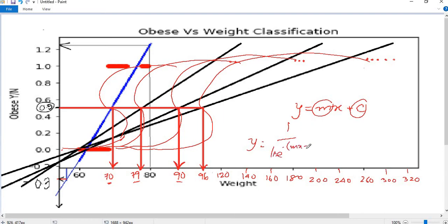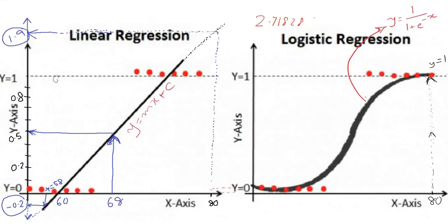The logistic regression equation is y = 1 / (1 + e^(-(mx + c))). For multivariate logistic regression with more than one variable, the equation becomes y = 1 / (1 + e^(-(b0 + b1*x1 + b2*x2 + ... + bn*xn))).